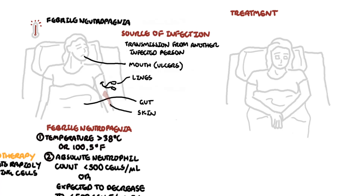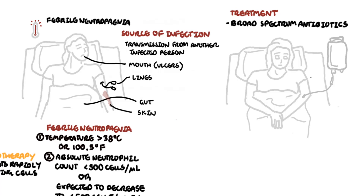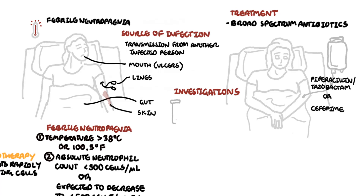Febrile neutropenia is an emergency and requires prompt administration of empirical broad-spectrum antibiotics, typically piperacillin-tazobactam or a third generation cephalosporin such as cefepime. Prior to giving someone antibiotics, identifying the potential source of infection is important, and this involves culturing everything — culturing blood, urine, and any lines the patient may have.